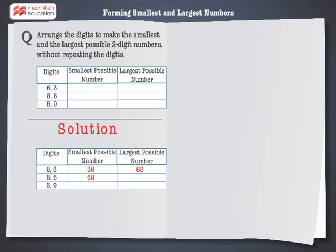Now, to form the largest number with 8 and 6, put the larger digit in the tens place. So, the largest number formed with the digits 8 and 6 is 86.